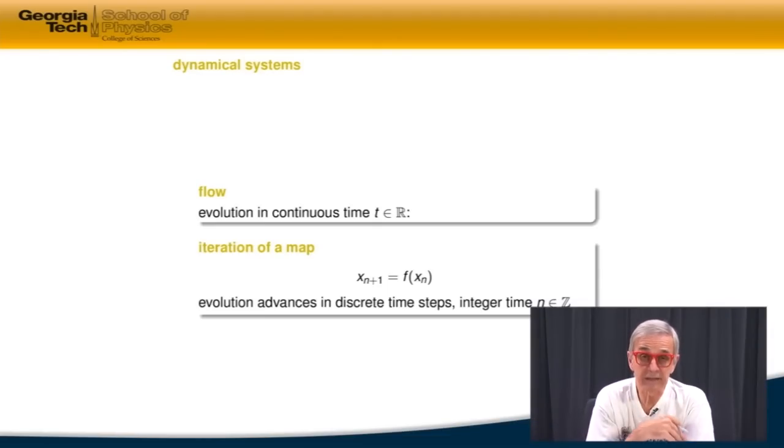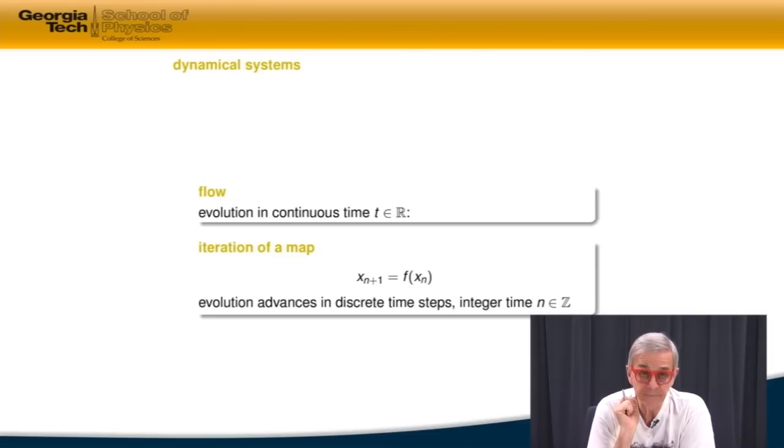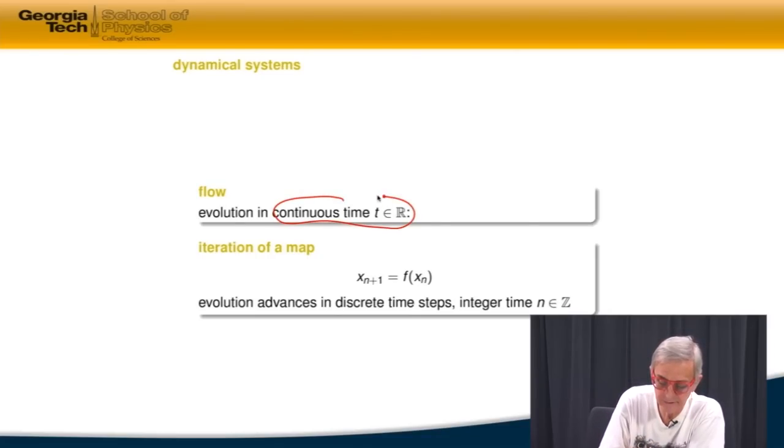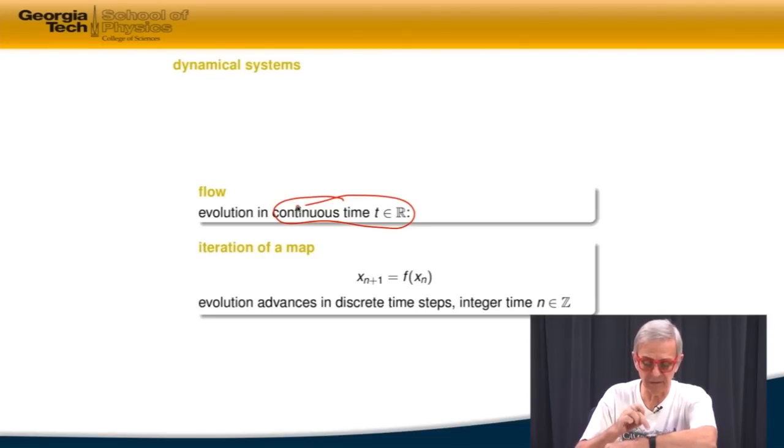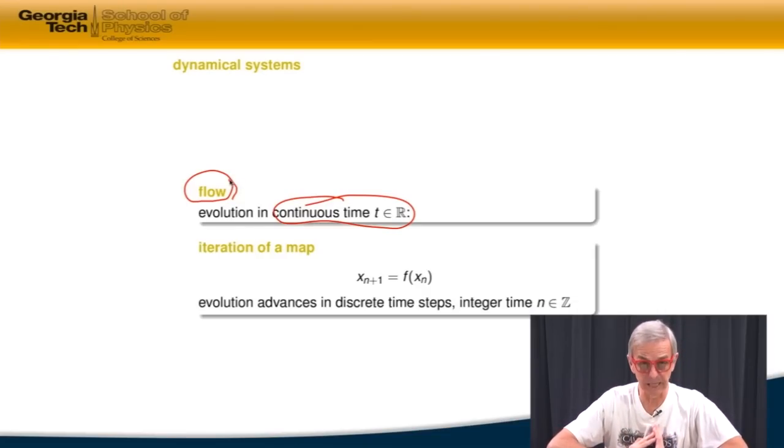So then there are two kinds of dynamical systems that we'll consider. And depending on the context, they're really one-to-one related. But sometimes we think of evolution as evolution in the continuous time. So we look at our clock and every microsecond something happens. And in that case, we call the law of flow. Neighboring points in state space are moving like fluid is moving.